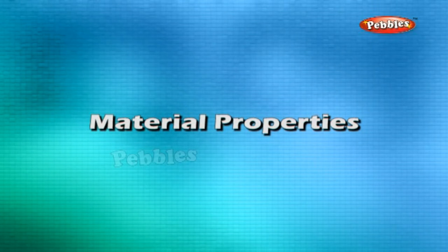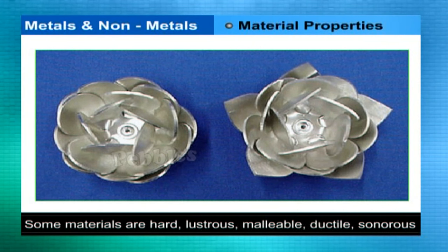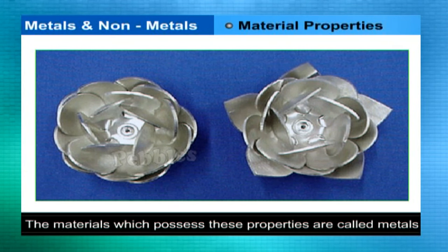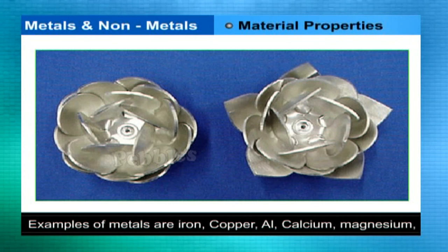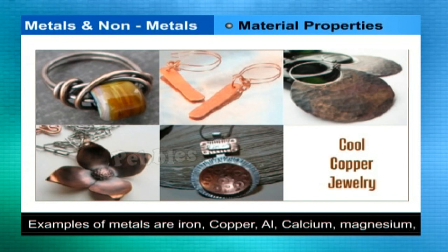Material properties: Some materials are hard, lustrous, malleable, ductile, sonorous, and good conductors of heat and electricity. The materials which generally possess these properties are called metals. The examples of metals are iron, copper, aluminium, calcium, magnesium, etc.